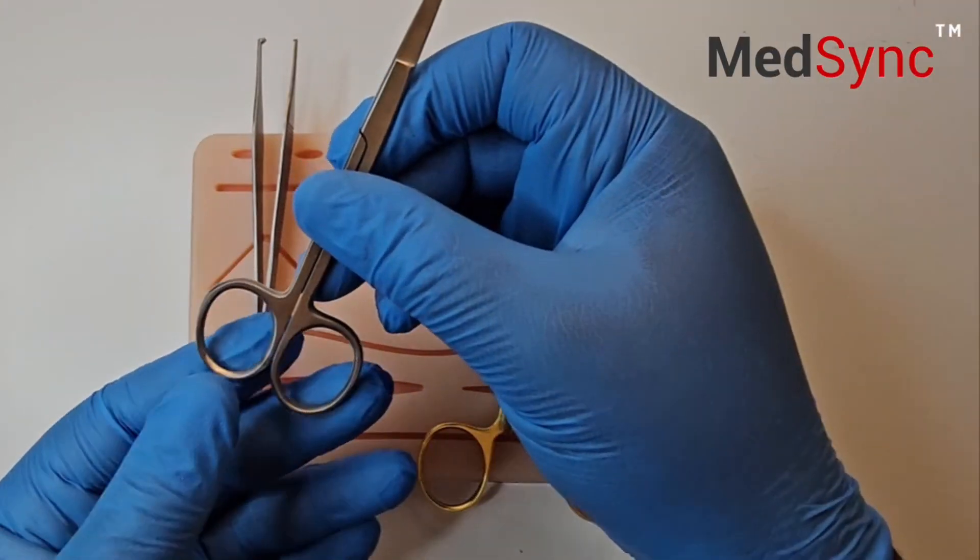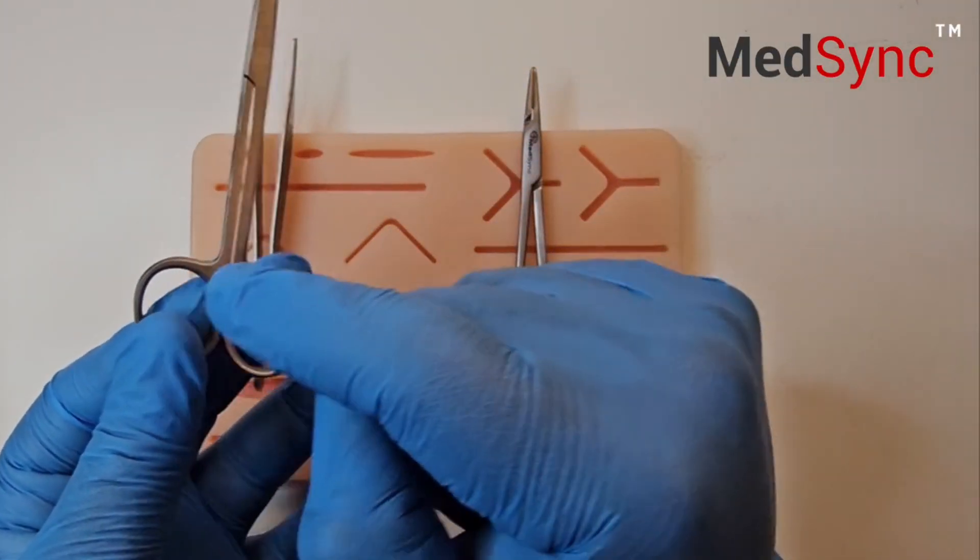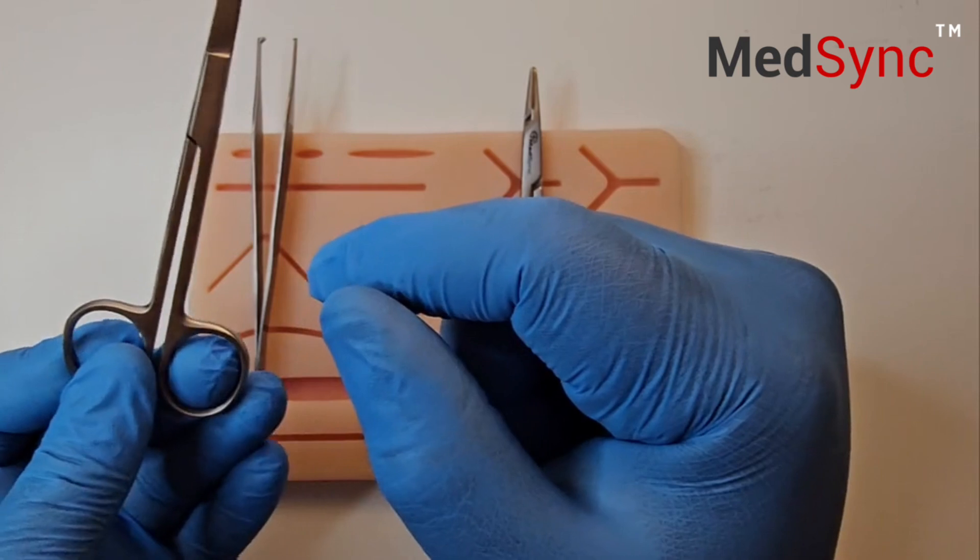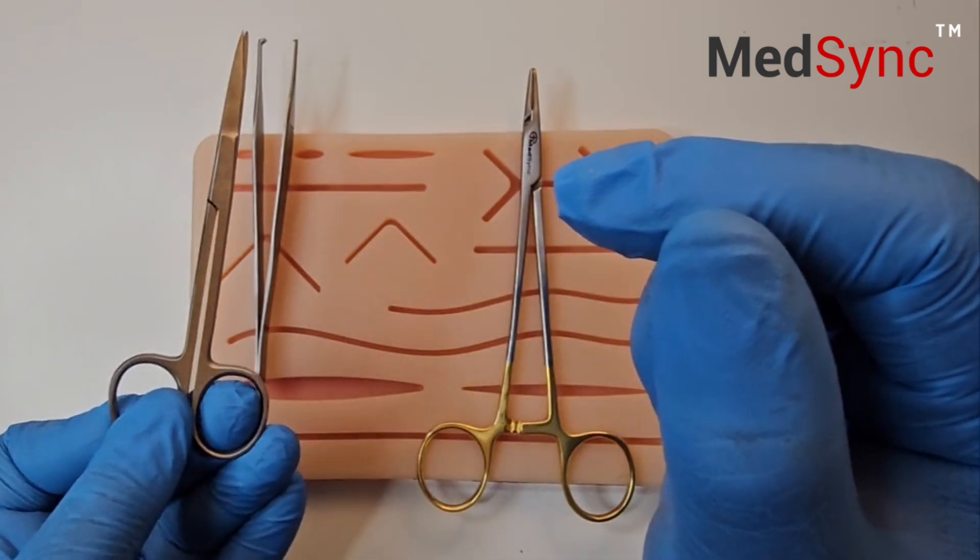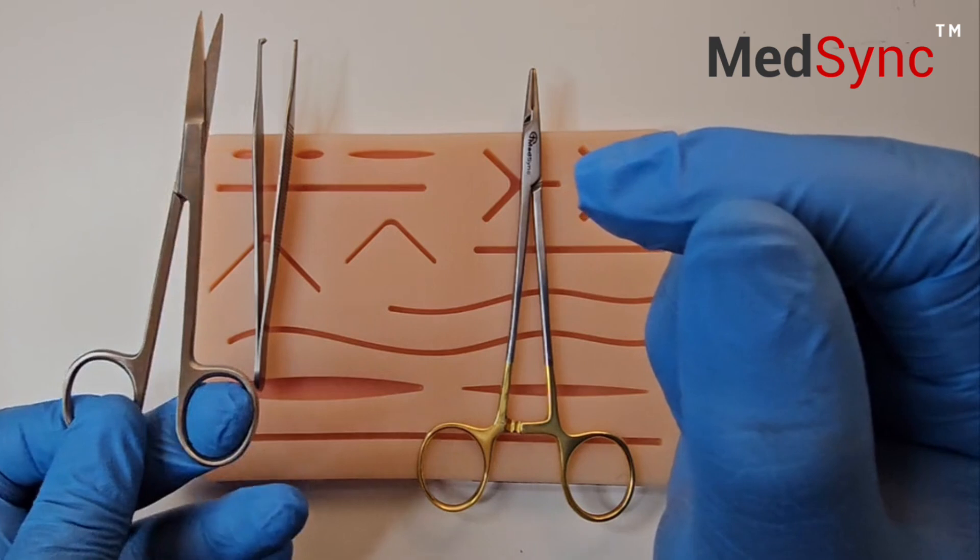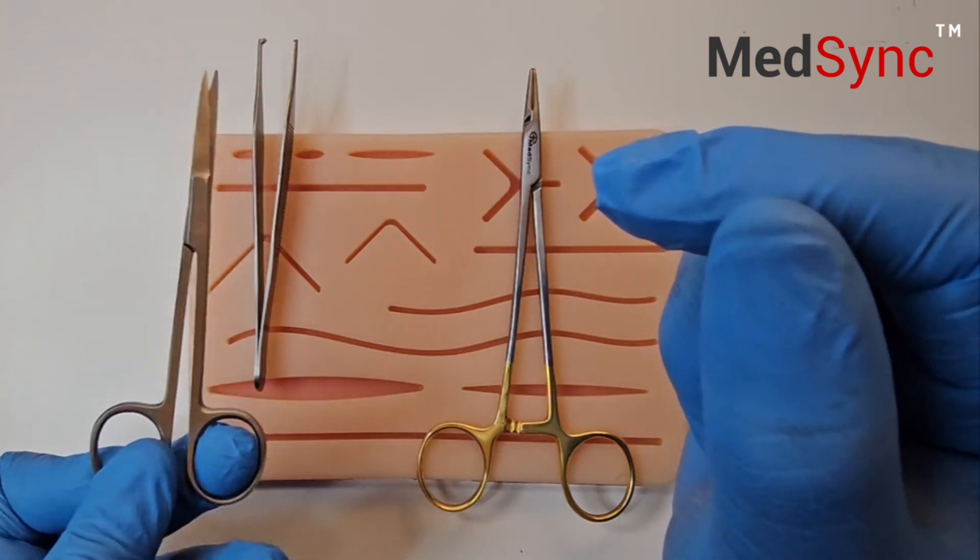If you're cutting with your left hand, one ring is between your thumb and index. The middle finger is on the other ring. You simply apply opposing force and open and close the scissor.